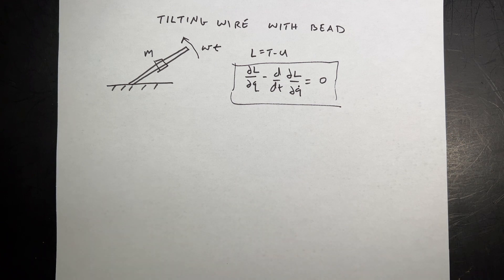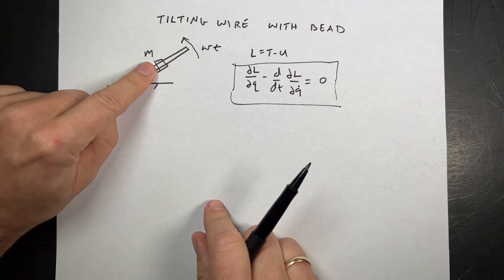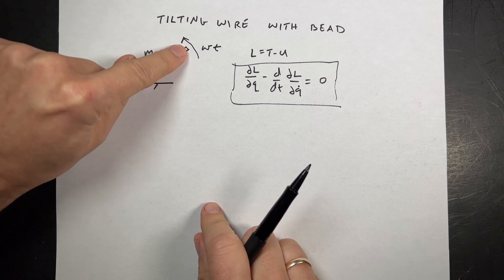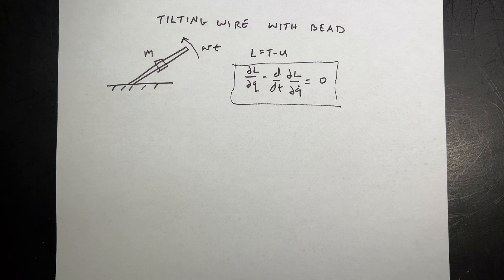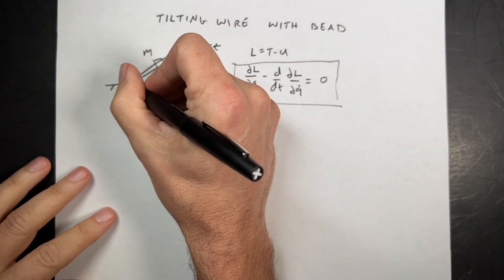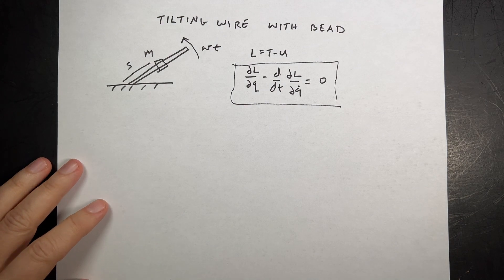So the first thing we need to do is say, well, how many degrees of freedom do we have for this thing? And you may think, well, it's moving in two dimensions so it has two degrees, but it doesn't. It's only moving in one dimension. It's fixed on this wire. And yes, the wire can move, but that's not something that's free to move. It's set to move. So that means we only have one degree of freedom. So let's call this variable, the distance from the bottom, we'll call that S.